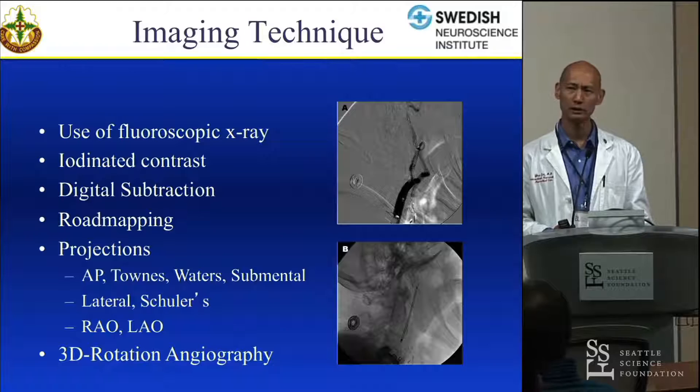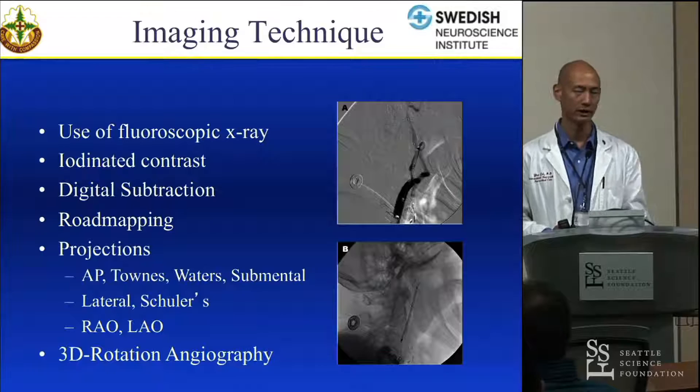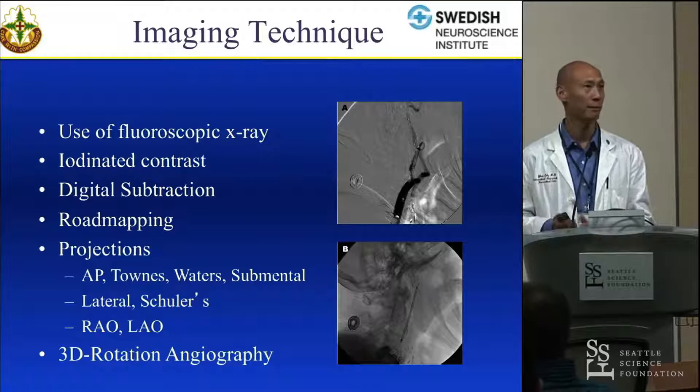Roadmapping does something similar, where you take the live image superimposed over the subtraction of everything else. Now you have a white-on-dark image, which creates a roadmap for you to then navigate your catheter or your microwire-microcatheter microsystem.